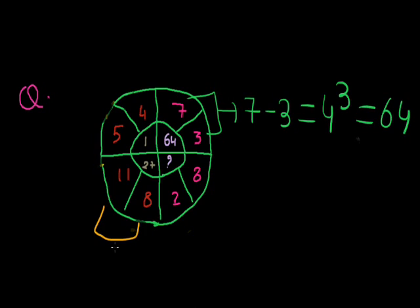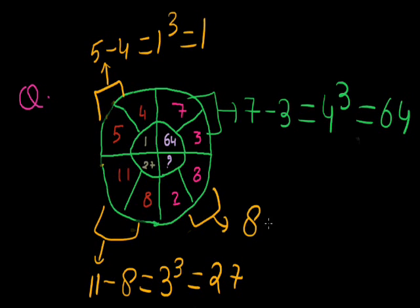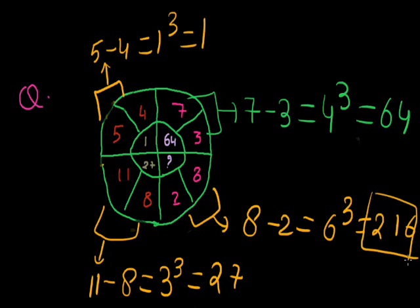Same here, when 11 minus 8 equals 3, and when we cube it, it comes 27. And same in here, 5 minus 4 is equal to 1. When we cube it, it's equal to 1. When we do it in this also, it comes 8 minus 2 equals 6, and when we cube it, it's 216. Am I right? Yes, you are correct.